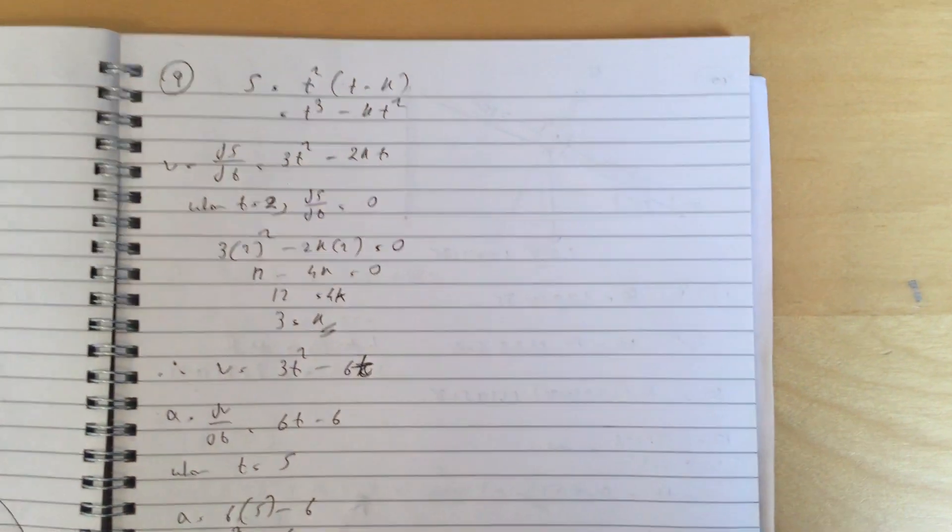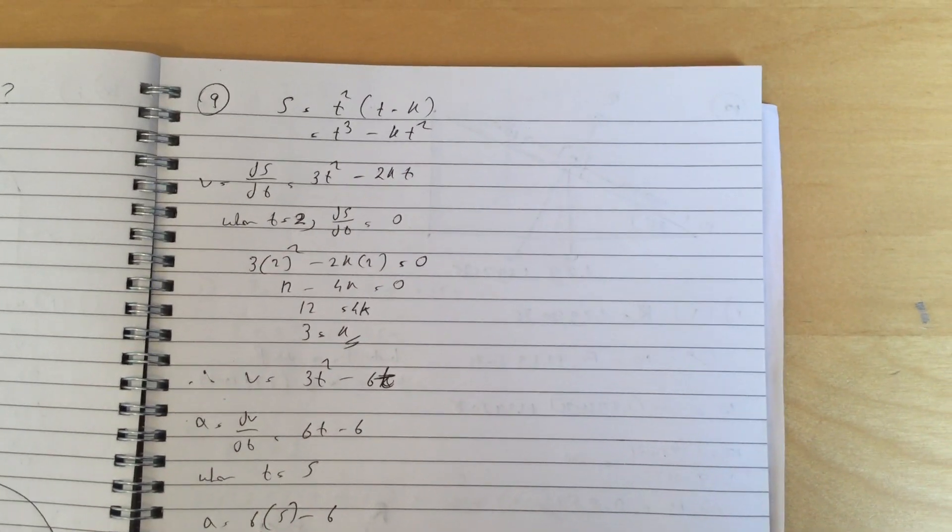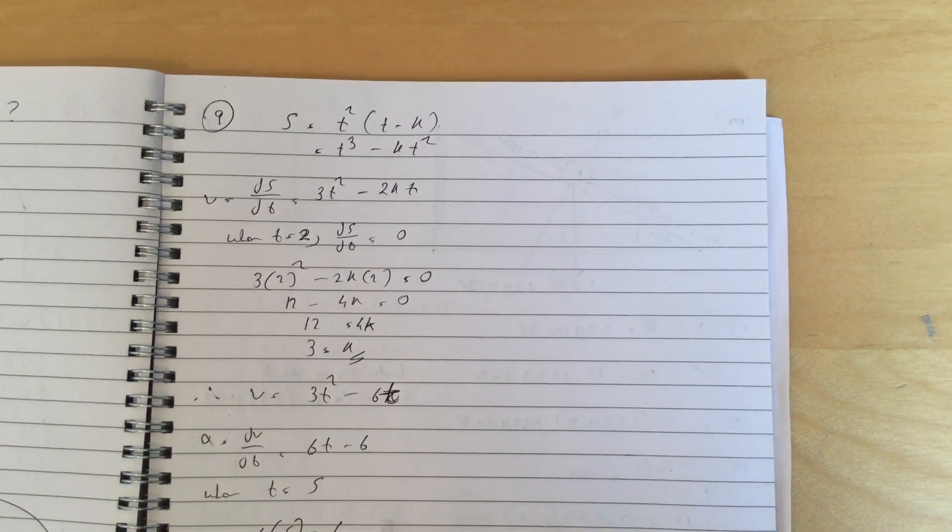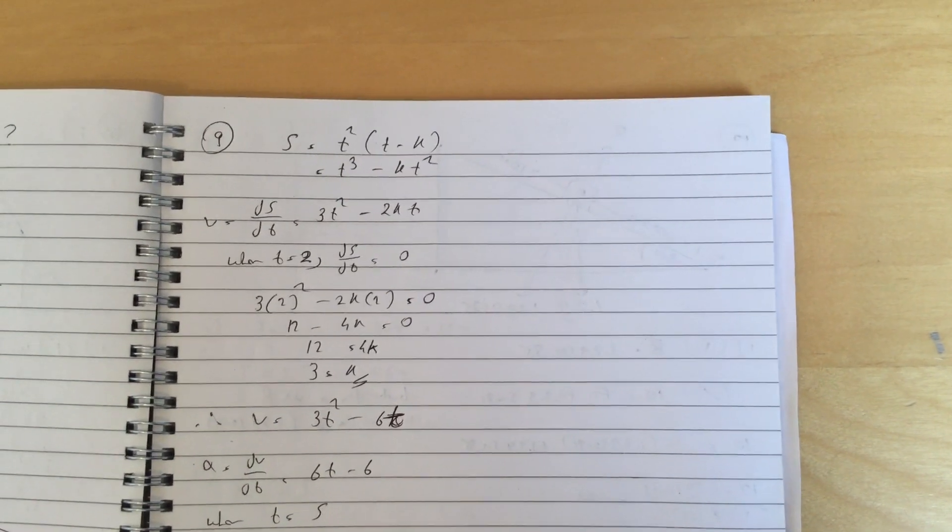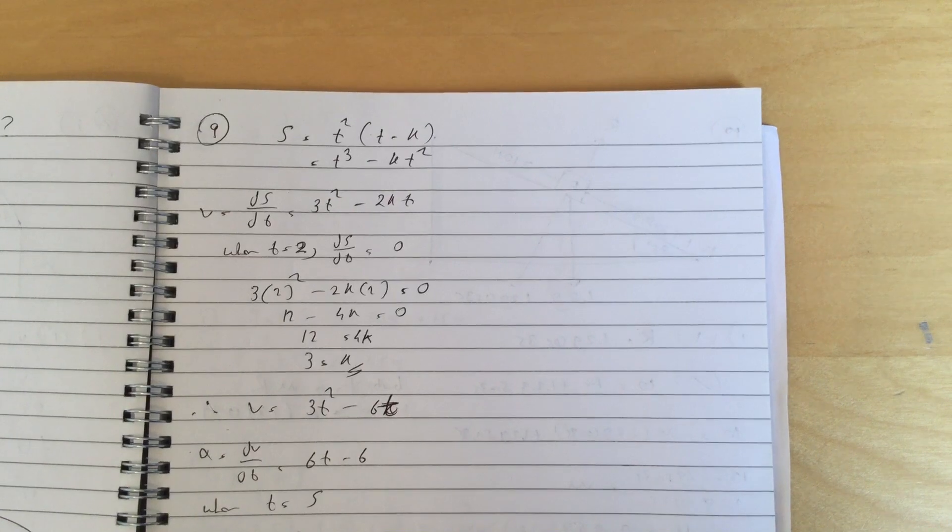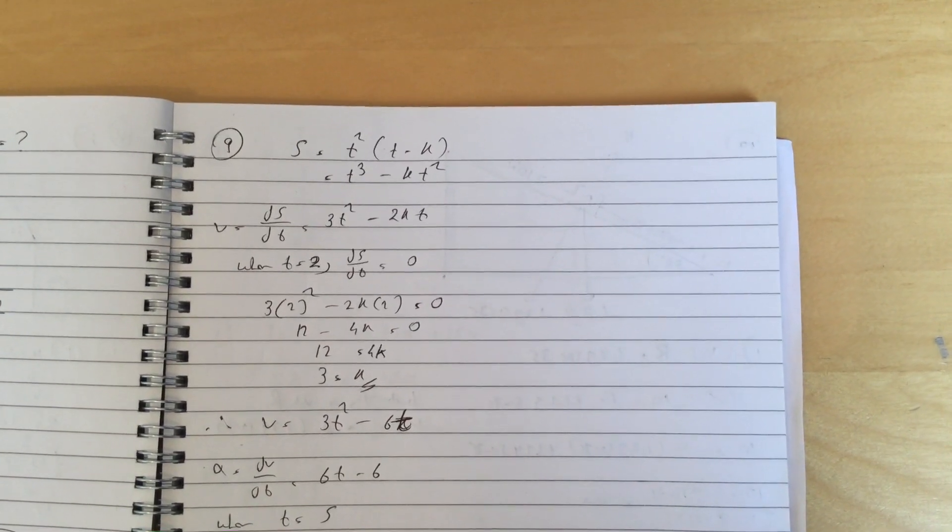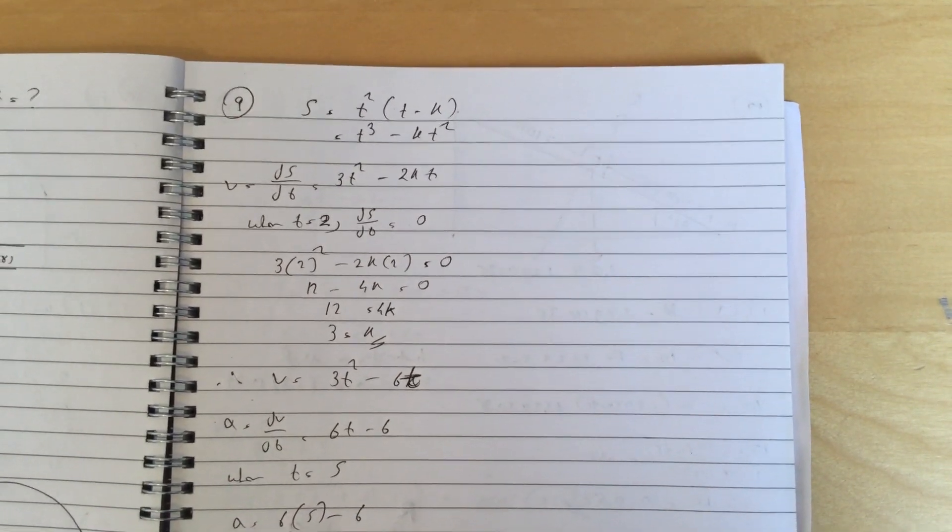Question 9, so you get dv dt equals, I mean ds dt equals 3t squared minus 2kt. You make that equal to 0 with t equals to 2, and you get k equals to 3. So v equals to 3t squared minus 6t.